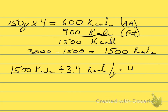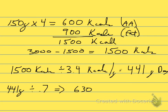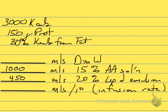So with 1,500 calories needed from dextrose at 3.4 calories per gram, that tells me I need 441 grams of dextrose. Now I need to convert that to a volume — I take 441 grams and divide by 70%, since we're using 70% dextrose, and that gives me 630 mL of D70.